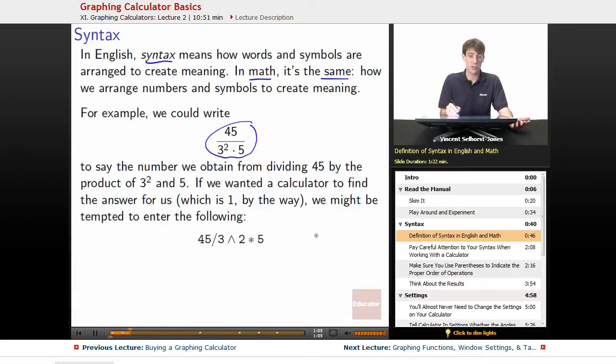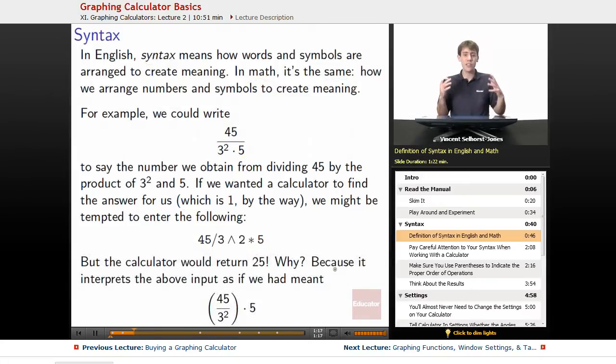If we wanted a calculator to find the answer for us, which happens to be 1 by the way, we might be tempted to enter the following. So we would use this as our syntax for putting it into our calculator. However, if we did that, we'd actually get 25, which is completely the wrong thing. Why?